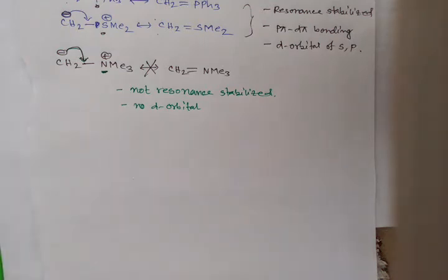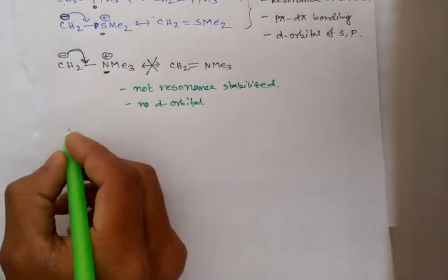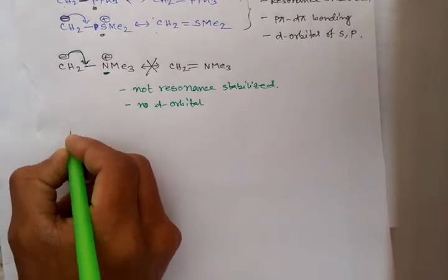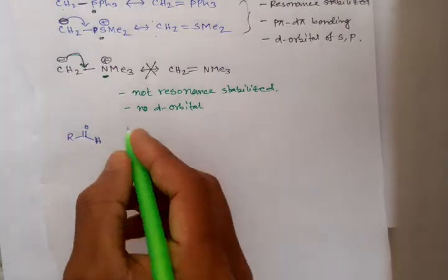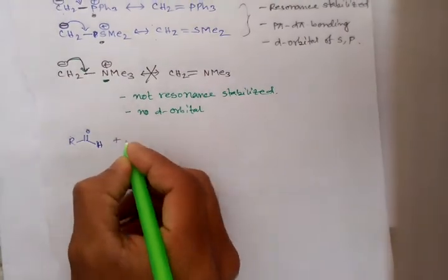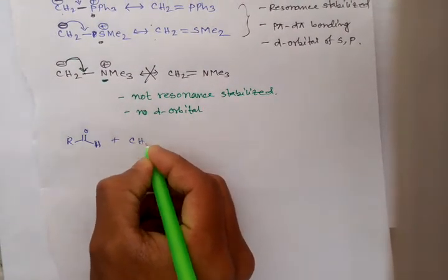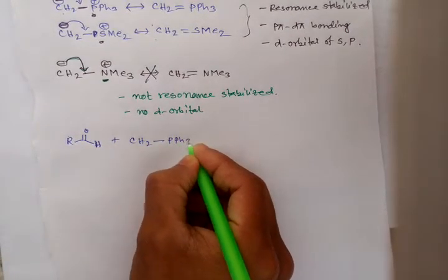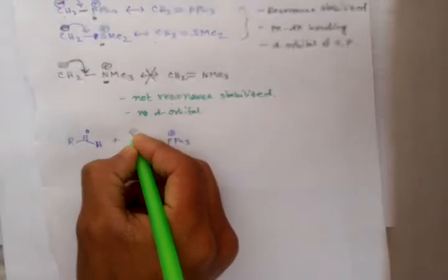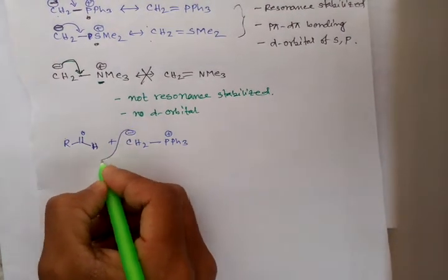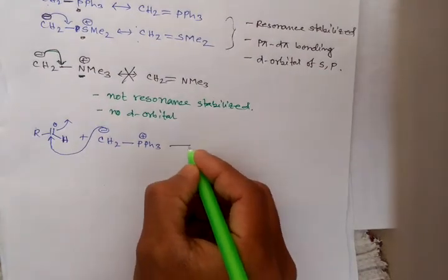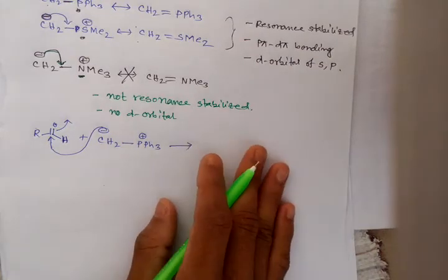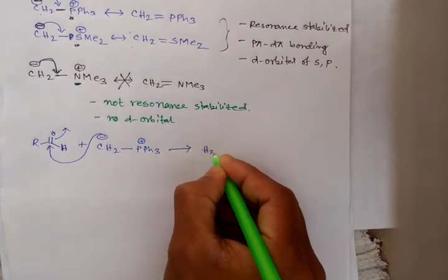Now I am going to add aldehyde or ketone to the ylide. For aldehyde, R-CHO, the negative charge of the ylide CH2-PPh3 attacks here and this opens up.